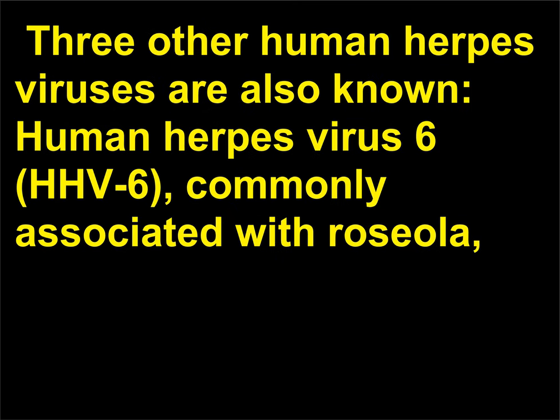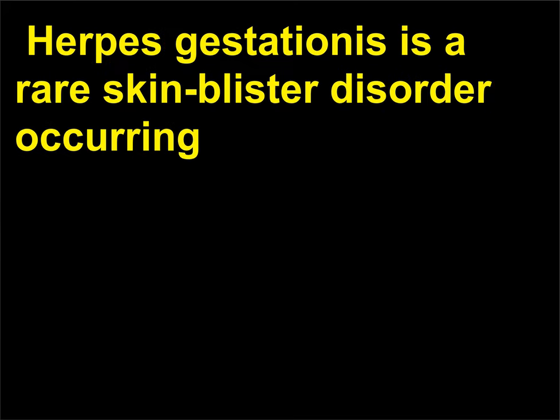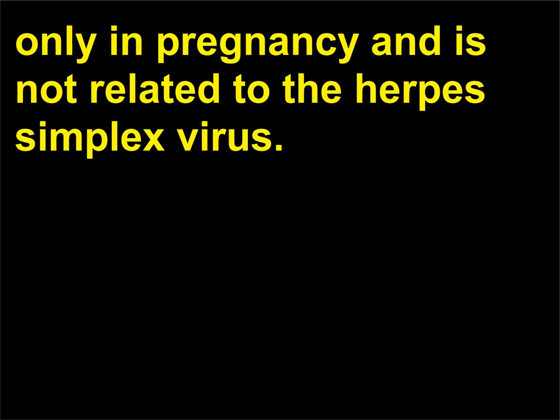Three other human herpes viruses are also known: human herpes virus 6 (HHV-6), commonly associated with roseola, and human herpes viruses 7 and 8 (HHV-7 and HHV-8), whose disease association is not yet understood. Herpes gestationis is a rare skin blister disorder occurring only in pregnancy and is not related to the herpes simplex virus.